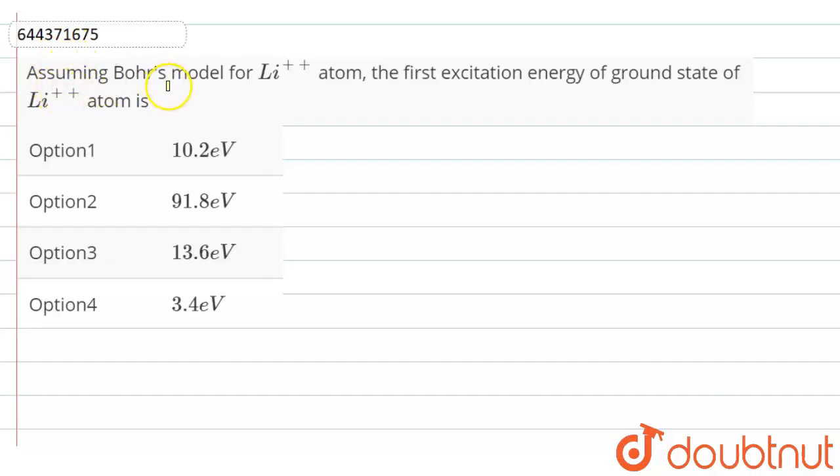In this video we are going to discuss this question: Assuming Bohr's model for lithium 2+ atom, the first excitation energy of ground state of lithium 2+ ion is. In this question we have to find the first excitation energy.